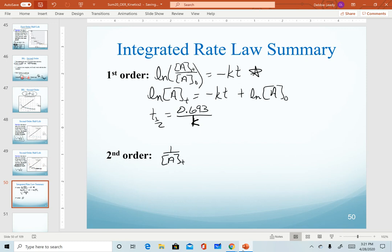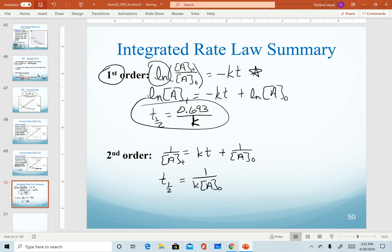For second order, the difference is that we use a different function of concentration to get a straight line. We take the inverse of concentration, and we get a different half-life equation. So all of these equations are on your equation sheet, but it is important to recognize and remember the relationship. So anytime we're describing a first-order reaction, we're using the natural log equation and this half-life. And this works vice versa. The next video, we'll talk about examples of graphs and how we can use those to determine the order.